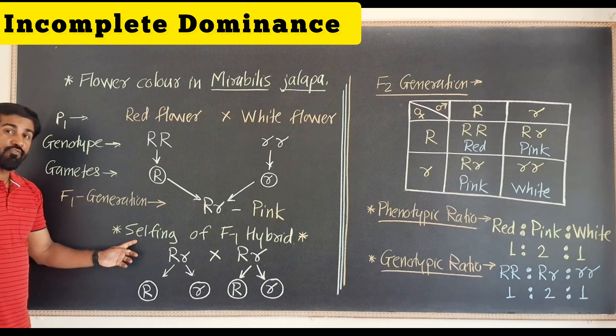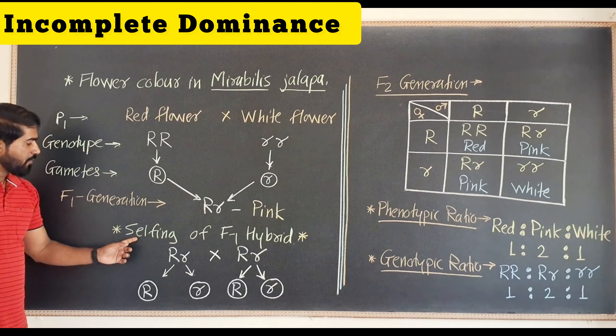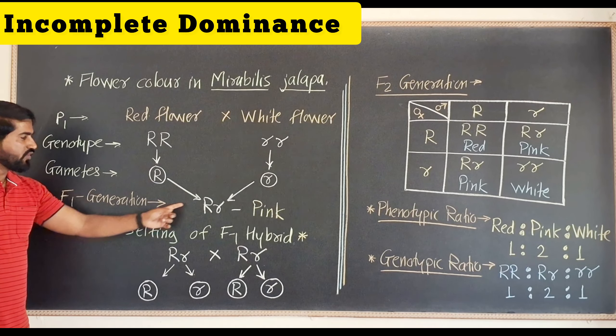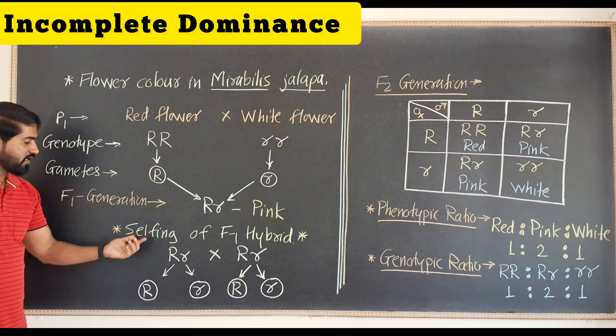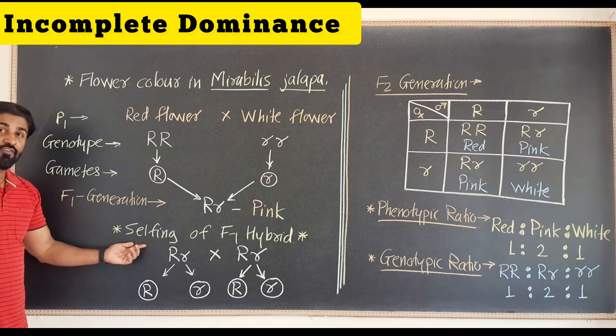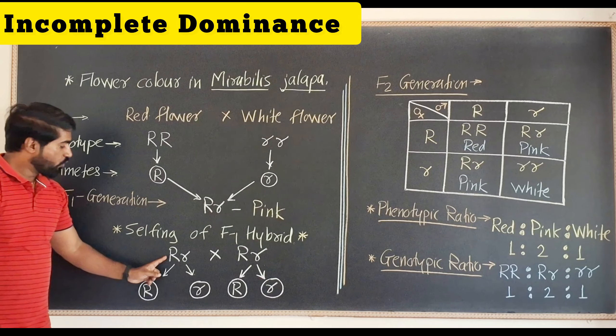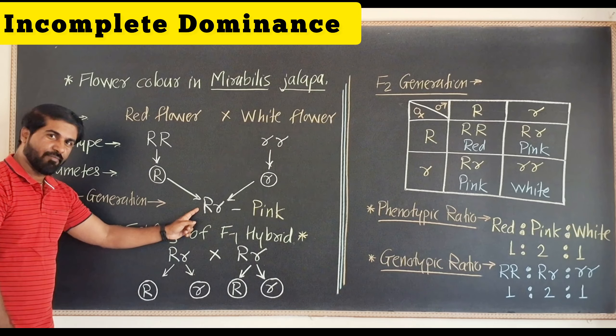Now we are going for F2 generation by crossing F1 hybrids with each other, that means selfing of F1 hybrid. Here we are going to cross F1 hybrid with itself.